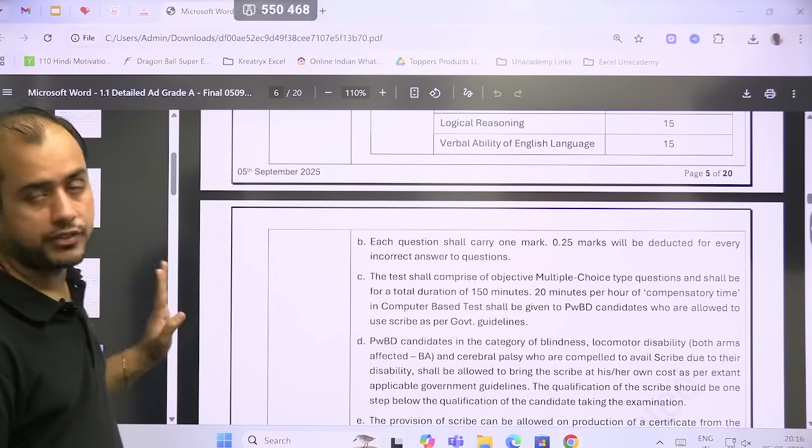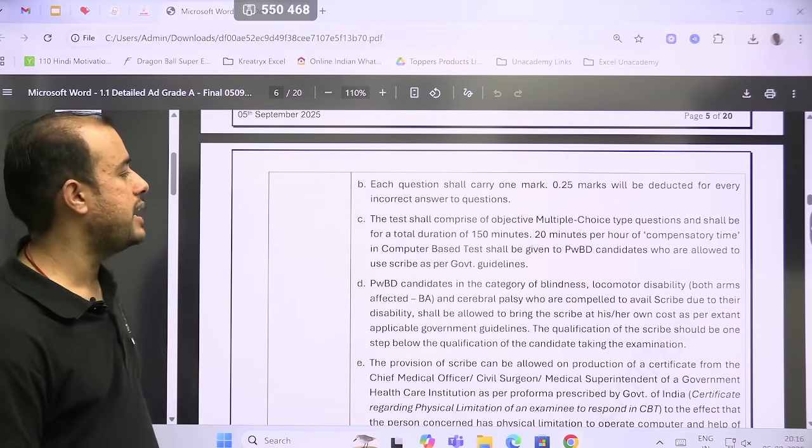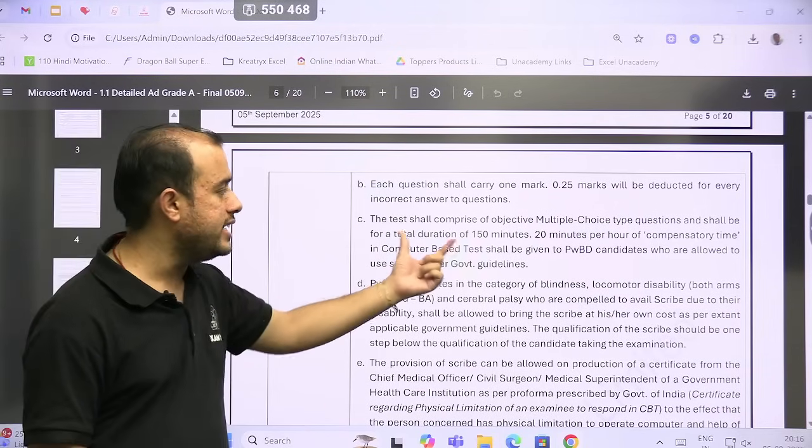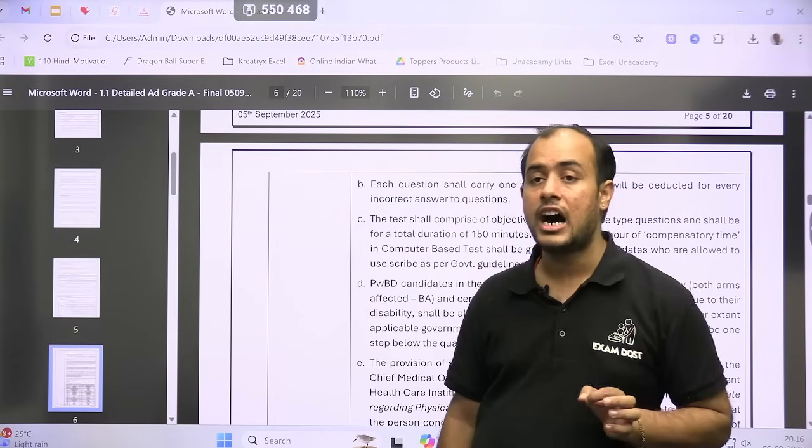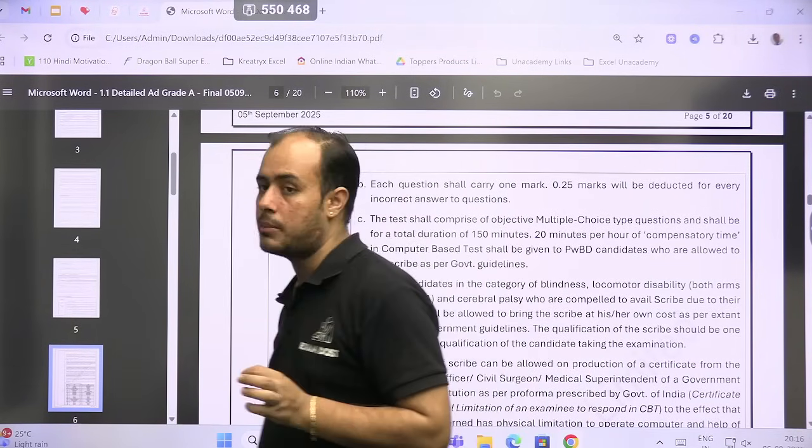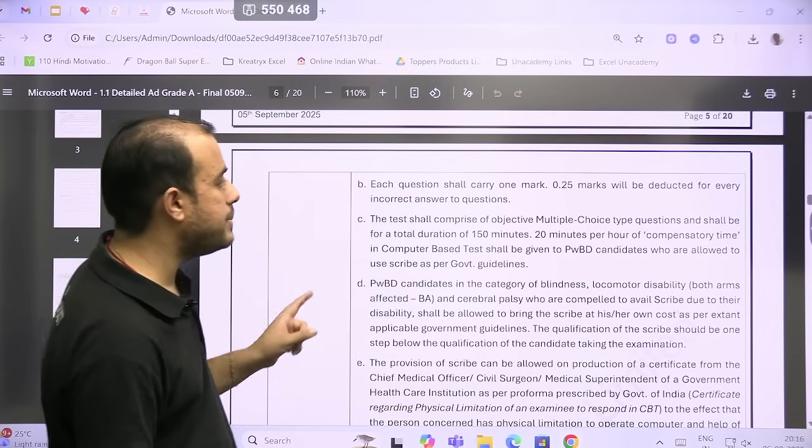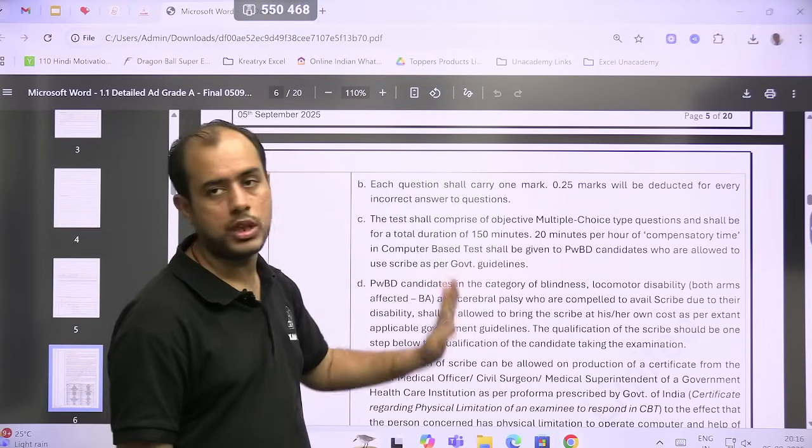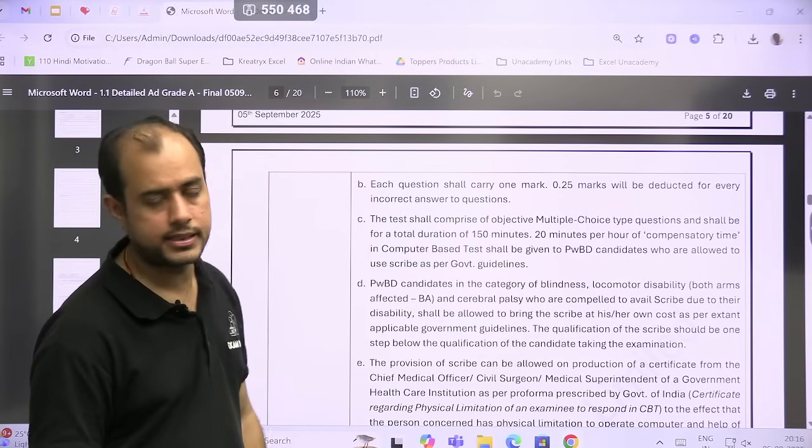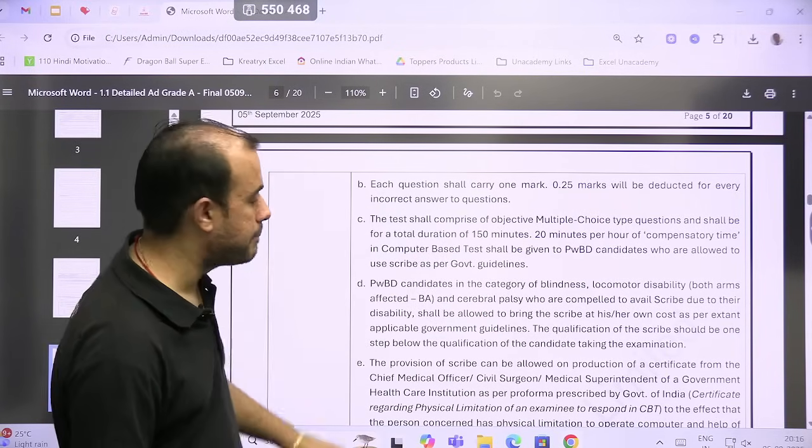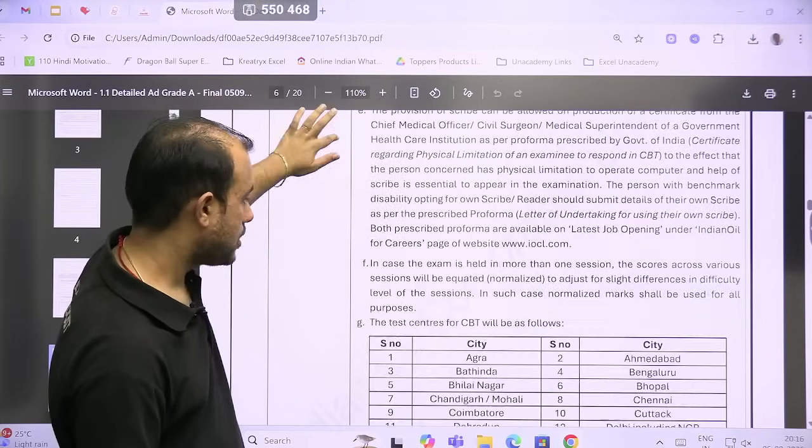Every question is for one mark and negative marking of 0.25, and all questions will be MCQ type. Totally you will have 150 minutes—that means two and a half hours. So two and a half hours is a good time when we talk about 100 questions of the PSU level. And 20 minutes per hour of compensatory time will be given to the PWBD candidate—that means a total of 50 minutes. In two and a half hours, 50 minutes will be the compensatory time, so they will get 200 minutes.